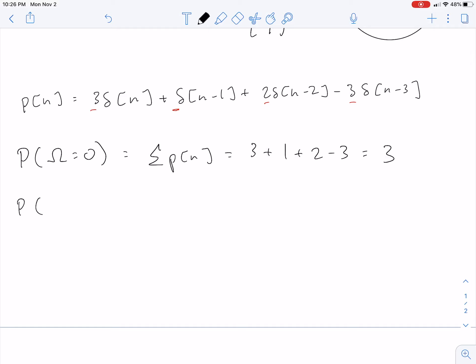P of omega equals plus or minus pi is the alternating sum, which is 3 minus 1 plus 2 plus 3, which is 6 minus 1 is 5, 7. Hopefully I did that math correctly.